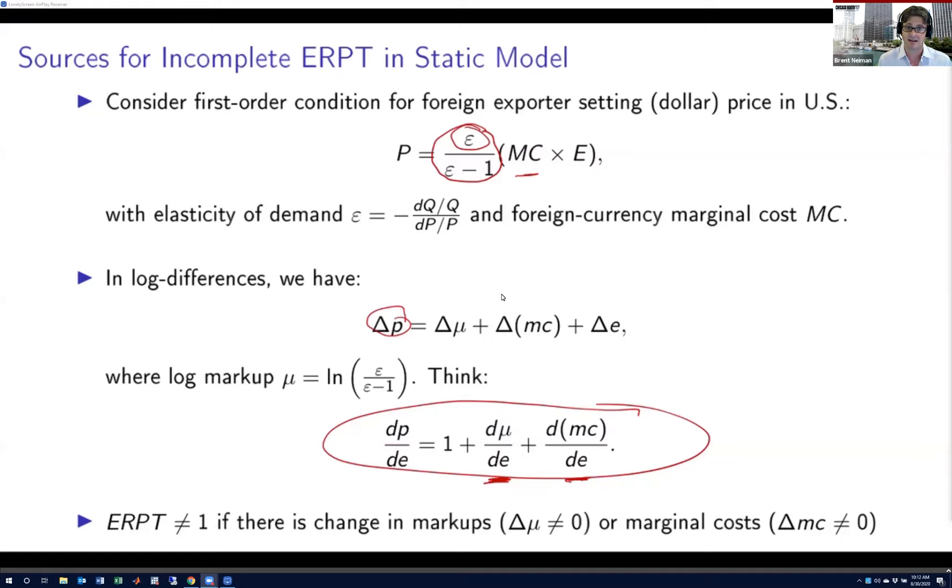Why might the marginal cost change in response to the exchange rate's movement? There's really two key issues. One would be if you happen to be an importer of goods that are used as inputs into production. Imagine that Japanese exporter was also an importer of intermediate inputs from the U.S. Well then, it's true that the yen's appreciation would hurt them on the export side, but it would also potentially lower the price of their intermediate inputs, therefore offering some offset there. Another reason why the marginal cost might move with the exchange rate is just if you have non-constant returns to scale. If the exchange rate moves and your price, and therefore your quantity, is going to move, all else equal, and you either have an increasing or decreasing marginal cost of production at that point in the production schedule, that's yet another force that will matter for pass-through.